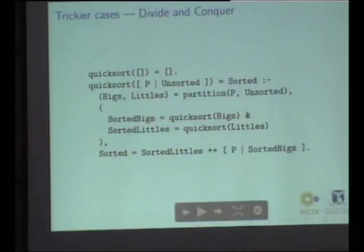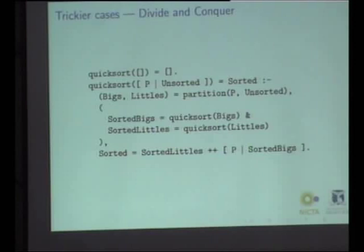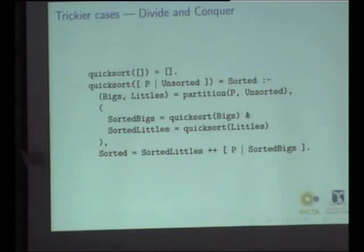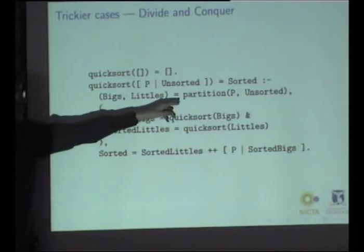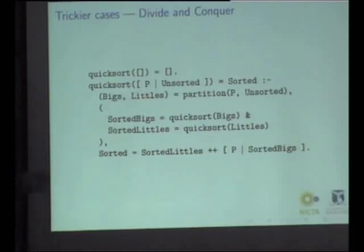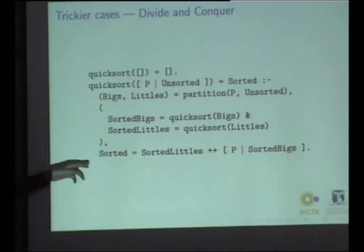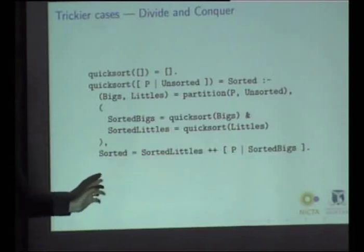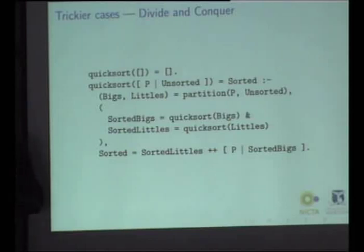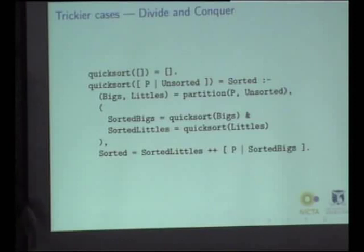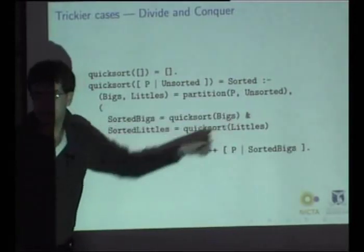I've shown some simple cases where we achieve parallelism, but I'd like to discuss more complicated cases we plan to handle in the near future, which I'll probably implement in the next six months. This is the quicksort algorithm. Simply, quicksort partitions the list around a pivot item, producing a list of big elements and a list of small elements, and sorts each of those before appending the lists with the pivot element back together to return the result. The very easy way to parallelize this is to run the two recursive quicksort calls in parallel. This is naive.